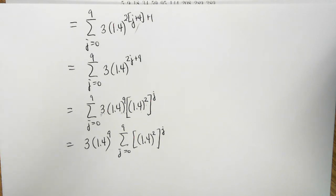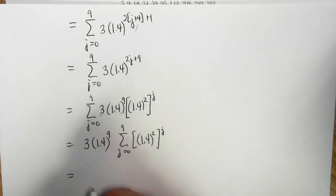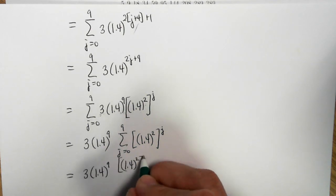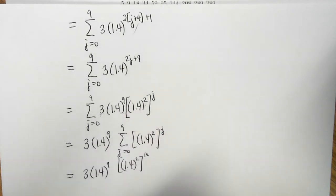From this point forward, we can use the formula for a finite geometric series that was derived with induction. And so we get this is equal to 3 times 1.4 to the 9 times my r is the thing inside the brackets, so 1.4 squared raised to the 10, 9 plus 1, minus 1, all over the r, 1.4 squared minus 1.